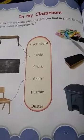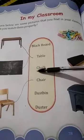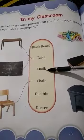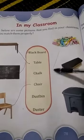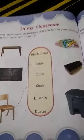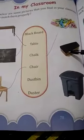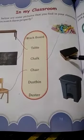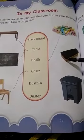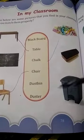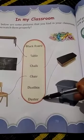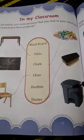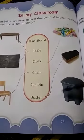Next is a chalk — C-H-A-L-K, chalk. You have to match it children. Next is a duster — D-U-S-T-E-R, duster. This one is the duster spelling, match it. Dustbin — D-U-S-T-B-I-N, dustbin. This one is the last one children, you have to match it.